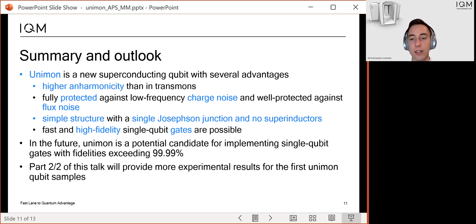Our theoretical and experimental results indicate that in the future, the Unimon is a potential candidate for implementing record-high single qubit gates. In the second part of this talk, Suman Kundu will present more experimental results and, for example, show you the spectrum of the qubit.